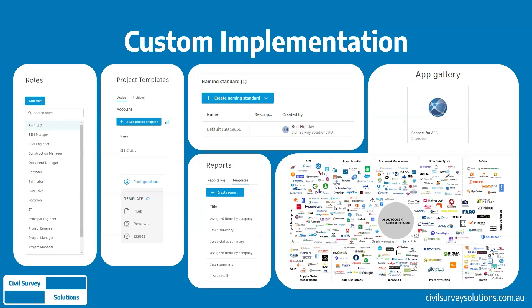The final implementation aspect is integration options. There is a wide range of integrations available through the Autodesk Construction Cloud — either native integrations or through ACC Connect. Common integrations are to accounting and project management systems or to other data environments such as SharePoint, where approved drawings and models can automatically be published to an external SharePoint location, as just one example of a potential workflow.